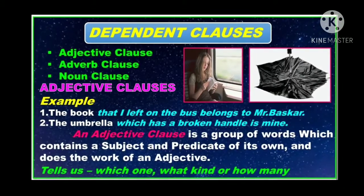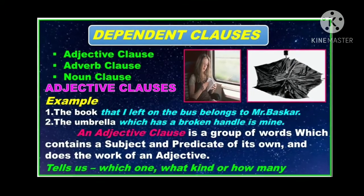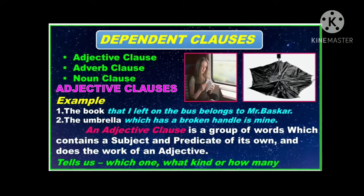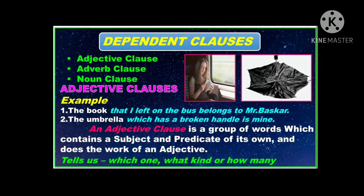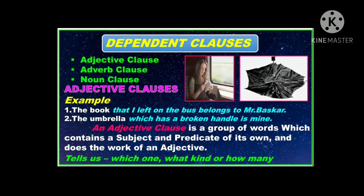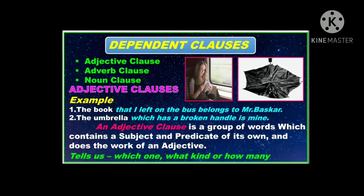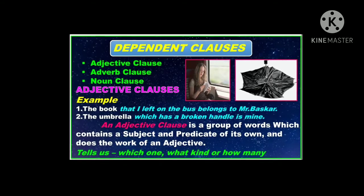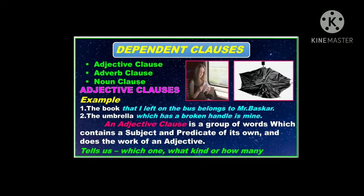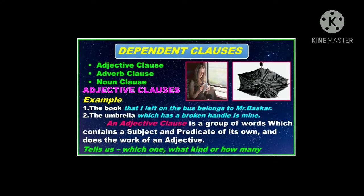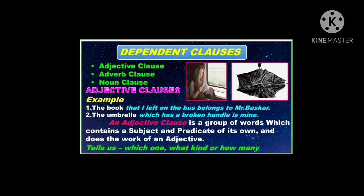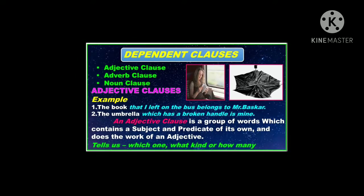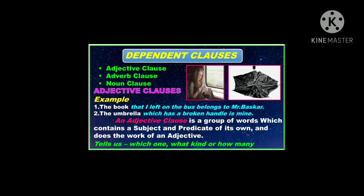The first one is adjective clauses. Look at the examples: 'The book that I left on the bus belongs to Mr. Basker.' 'The umbrella which has a broken handle is mine.' In these two sentences, the highlighted words are adjective clauses. The highlighted word in the first sentence describes the book, and in the second sentence describes the umbrella. An adjective clause describes or gives more information about a noun — which one, what kind, or how many. It does the work of an adjective.